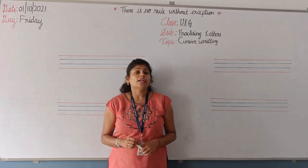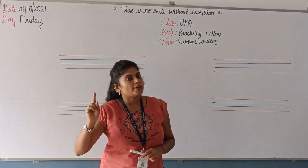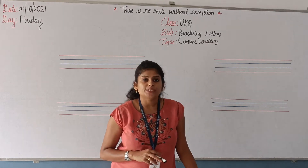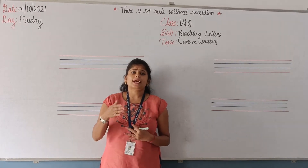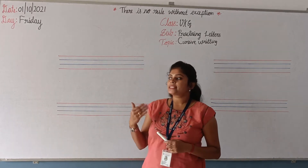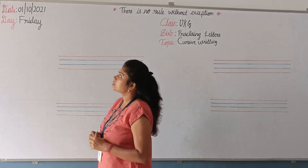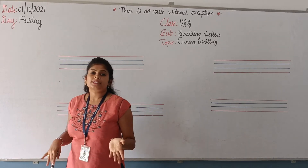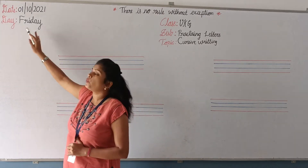Yes, in today's class we are going to learn about alphabet groups. What are alphabets? There are 26 letters in English — they are called alphabets. Today's date is the 1st of October 2021, Friday. Yesterday, September month got over. Today is October 2021, Friday.